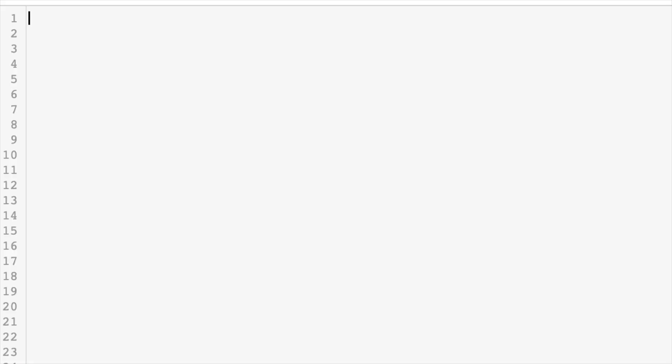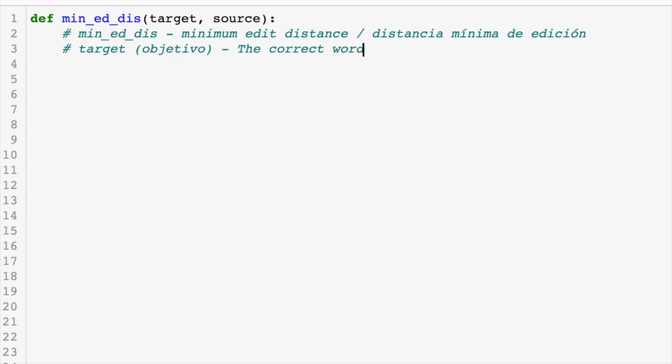Let's define our function. Define mineddist with a target and source as parameters. Of course, mineddist stands for minimum edit distance. The target word is the correct word, and the source word is the written word. Both words have a placeholder, the pound key or hashtag, whatever you want to call it. That character will be a placeholder at the beginning of each string. I'll explain more about what this means a little bit later on.